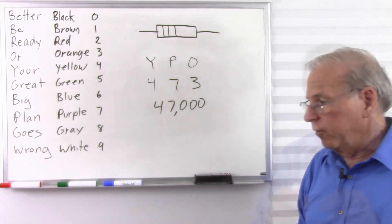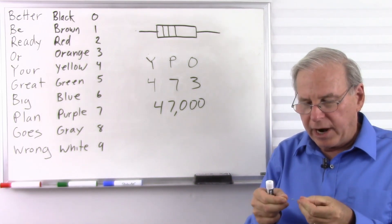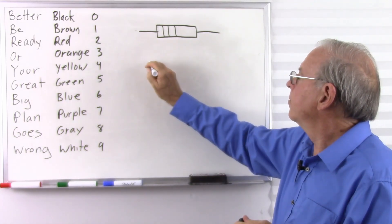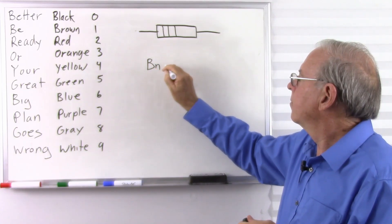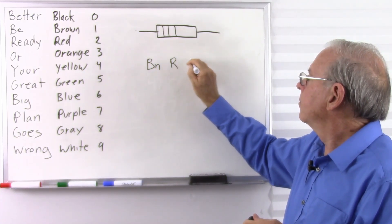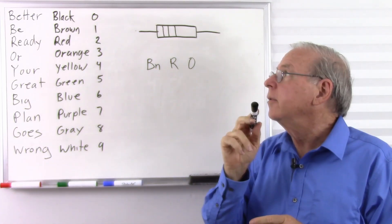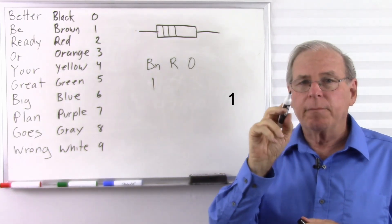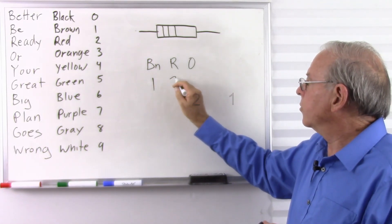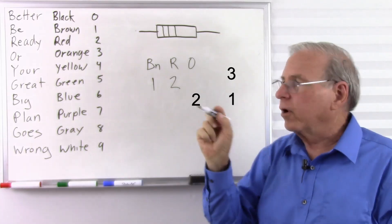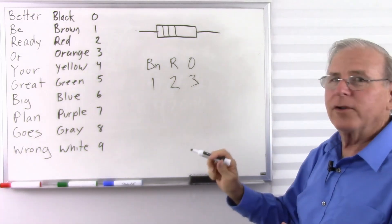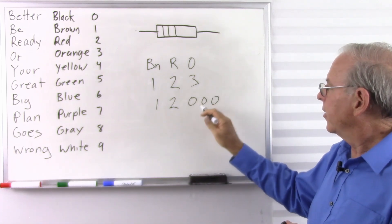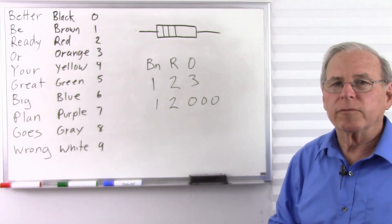Let's keep going. Here we have brown, red, orange. Brown: Be — that's one. Red: Be Ready — that's two. Orange: Be Ready Or — that's three. So that's one and two and three zeros — 12,000 ohms.